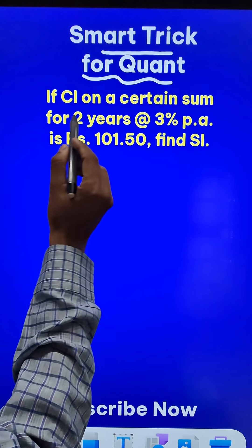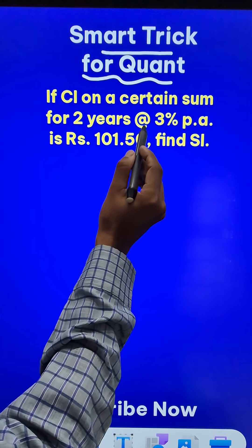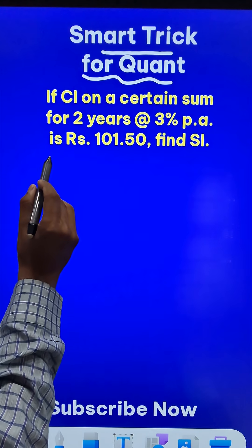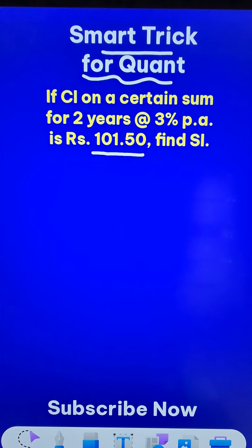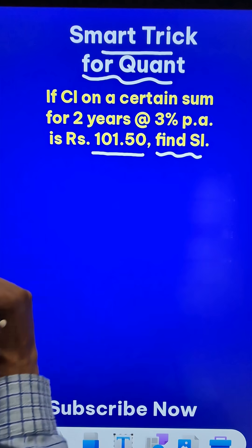If the compound interest on a certain sum of money for 2 years at the rate of 3% per annum interest is Rs. 101.50, we need to find the simple interest.